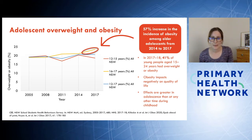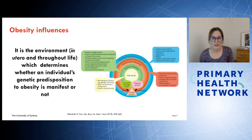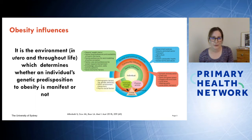Obesity negatively impacts on quality of life, and the effects are greater during adolescence than at any other time during childhood. The environment, both in utero and throughout life, determines whether an individual's genetic predisposition to obesity is manifested. There are many factors which affect this — individual, family, and community influences through schools and recreation facilities — and at the societal and political level, influences from media and policies.